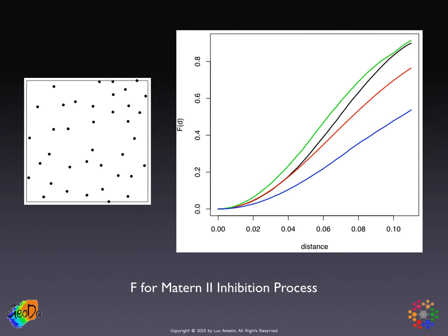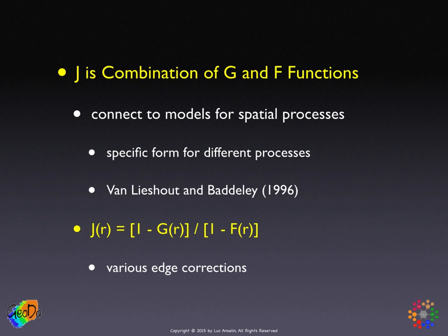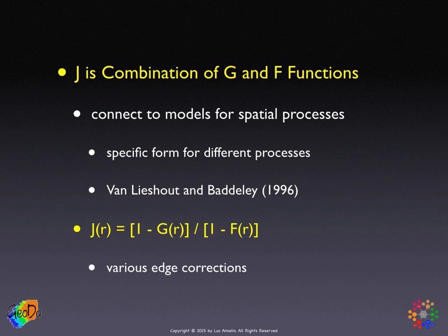Our third function in the series is the J function, which is actually a combination of the G and the F function. The specific purpose of the J function — developed in the context described in a paper by van Lieshout and Baddeley — is to connect the characteristics of the J function to specific models for spatial processes. It provides a much cleaner, direct connection with several theoretical spatial process models.